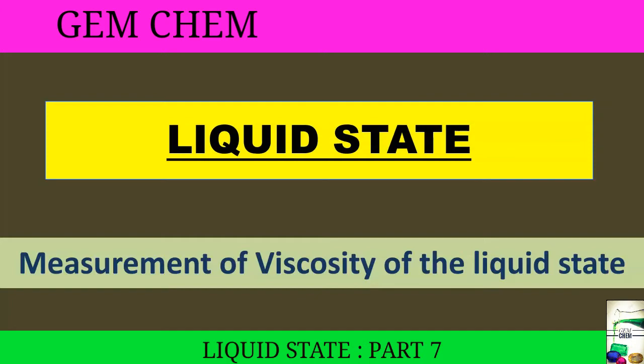We will deal with three methods of measurement of viscosity. First will be a relative method, second will be using the falling sphere viscometer, and the last will be the rotating cylinder method. The most important is the first one, and the last two will also be discussed.